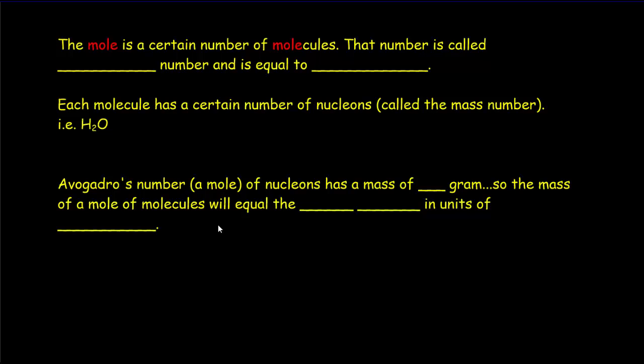So, this word mole, it's not about fuzzy little animals or shady characters. It's coming from the word molecule. And the mole is a certain number of molecules. We call that number Avogadro's number.